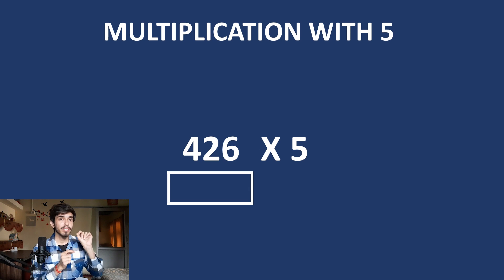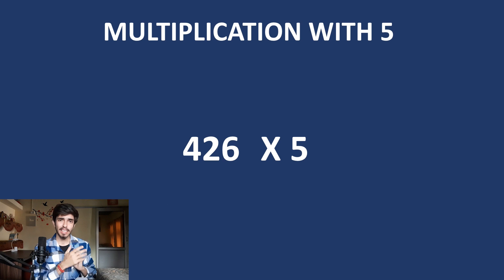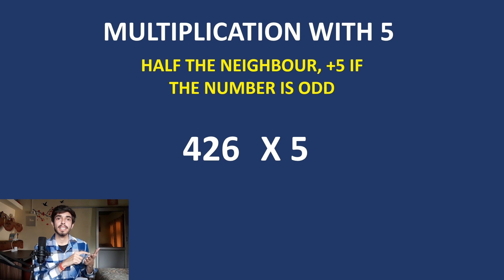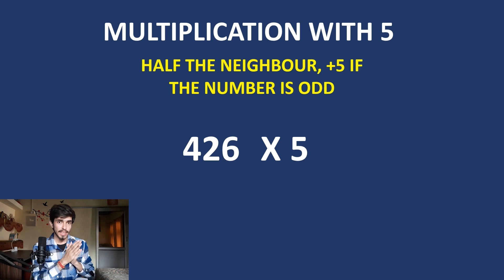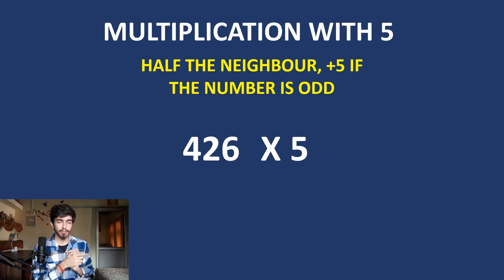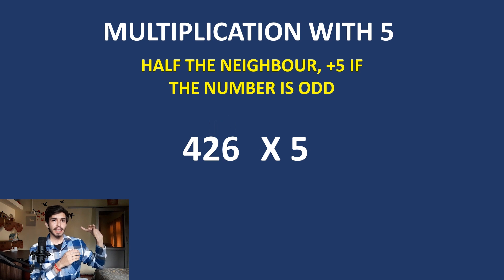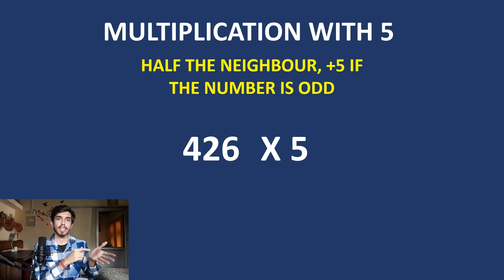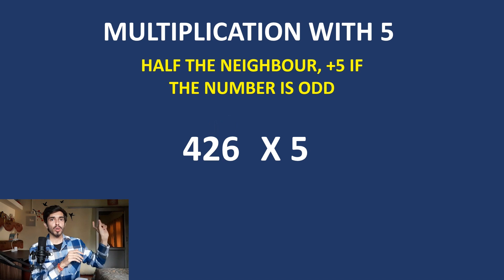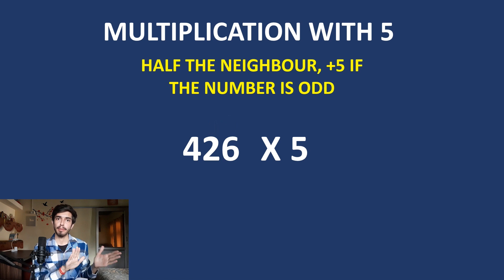To multiply with 5, you need to memorize this key: half the neighbor, plus 5 if the number is odd. In Trachtenberg system, 'neighbor' means the number to the right. For 426 multiplied by 5 — we have chosen a number where all digits are even, so we don't have to think about the odd rule for now. The rule is simply: half the neighbor.